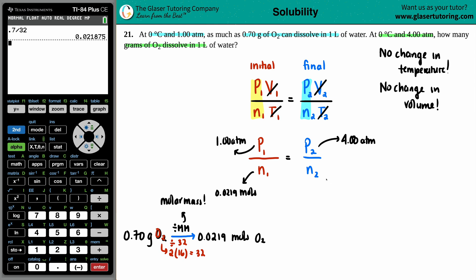And the thing that I'm trying to solve for here is X, the new moles. Because the question asks, how many grams of the O2? So let's see, I have 1 divided by 0.0219 equals 4, 4 divided by X. Cross multiply, right? 1 times X is just X. And now we just have to do 4 times the 0.0219.